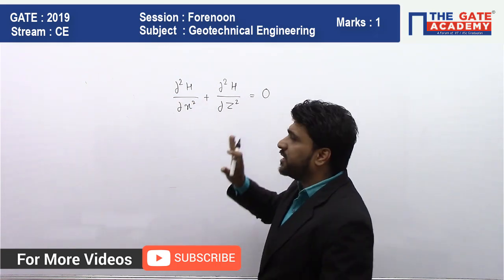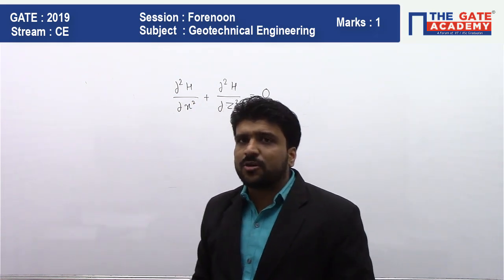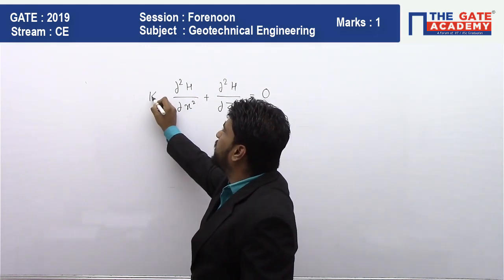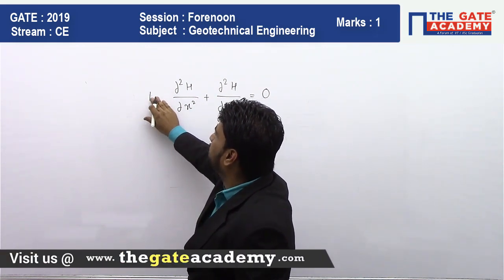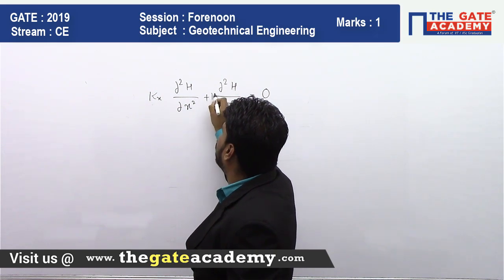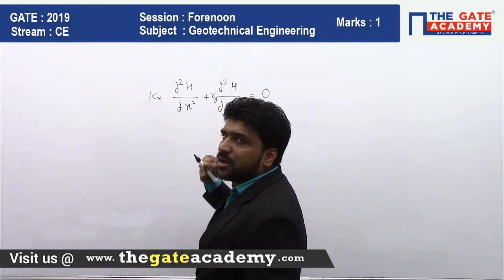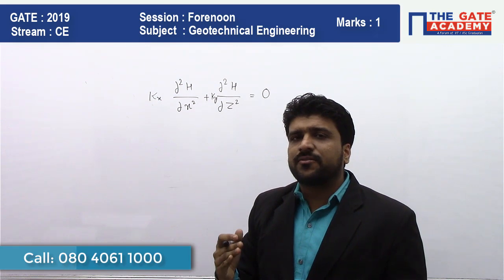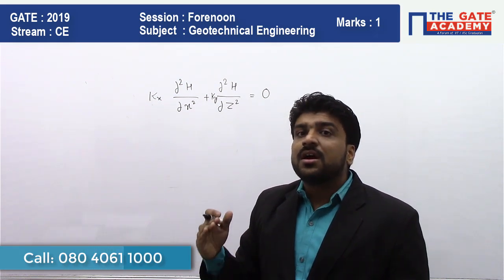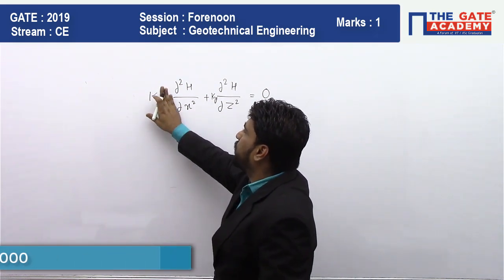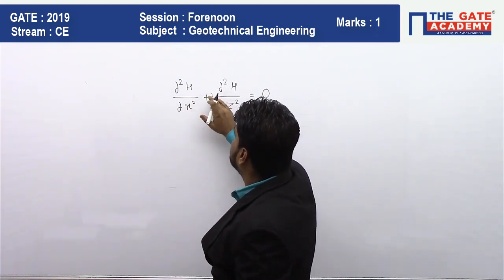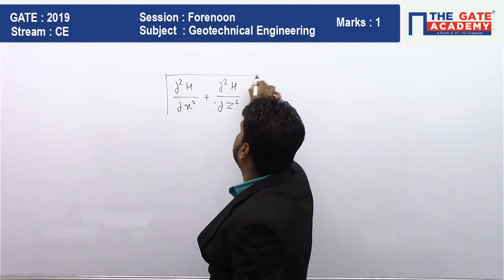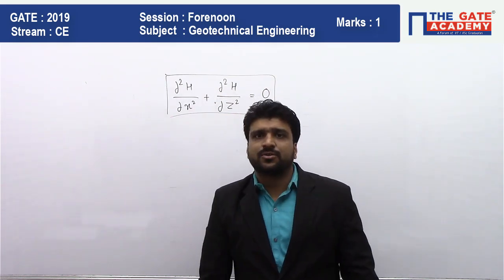This is the Laplace equation — this is head, this is the x direction, this is the z direction. Because it is isotropic, the equation is like this. Otherwise, if it is a non-isotropic medium, kx and kz terms would be present. But since the question specifies an isotropic medium, kx equals kz, so those terms cancel out. This will be the answer for this question.